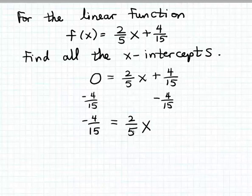And now I'm going to try to isolate x on the right-hand side of the equation by multiplying both sides of the equation by the reciprocal of the coefficient of x. And that would be 5/2. So I'm going to multiply both sides of the equation by 5/2.